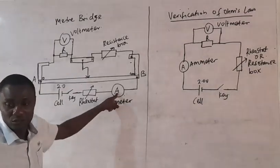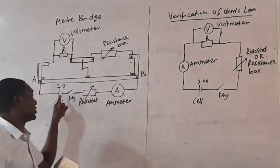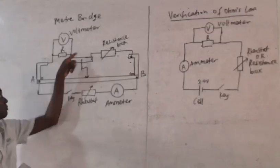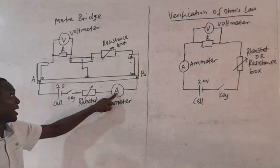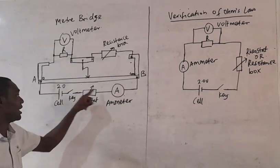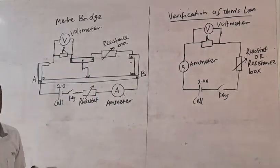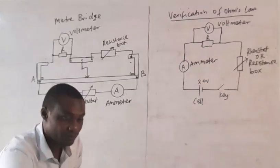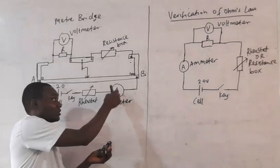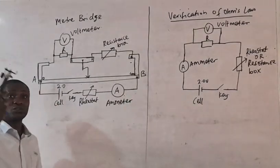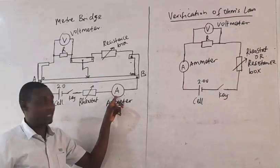Then we have an ammeter. The ammeter is always connected in series with the connection — whatever connection you want. So that's why I connected this in series. And mind you, all of these components here — these three components — can be placed anywhere along this part. The essence of this is to vary the current that flows through the ammeter.